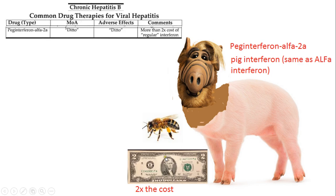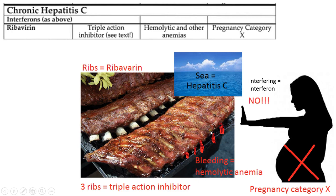Now we're getting into hepatitis C drugs — I put a picture of the letter C here to remember that. This one is called ribavirin. Here are three delicious ribs — ribavirin, ribs — and three ribs represents that this is a triple-action inhibitor. The side effect is represented by blood dripping off the ribs, which represents hemolytic anemia.